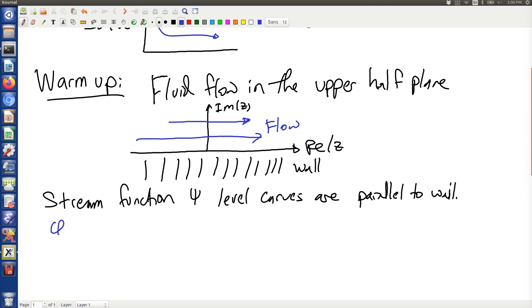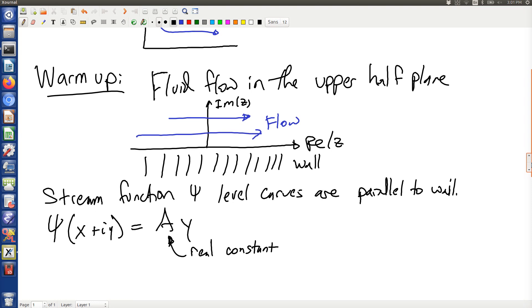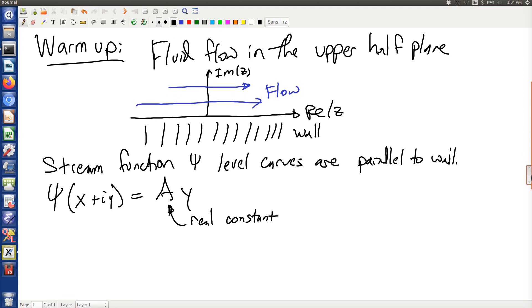And what does that look like? Well, the stream function as a function of x and y, if I want the level curves parallel to the wall, the stream function is real valued. It should be some real constant a times y. Because that way my level curves are parallel to the wall. Is this a solution to Laplace's equation, i.e., is this a harmonic function? Yes, because if I take two derivatives of either x or y, I get zero. So it's trivially harmonic.